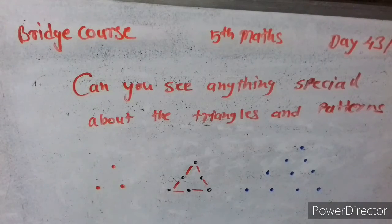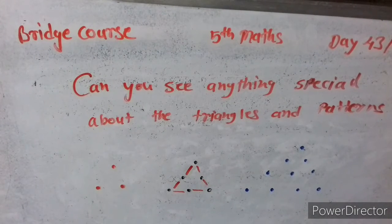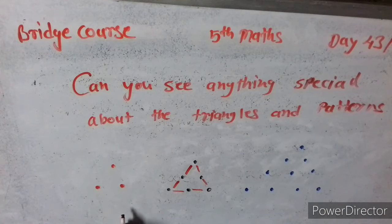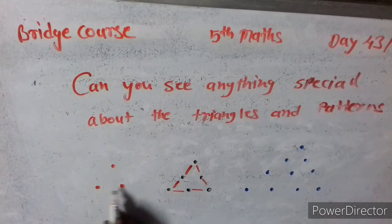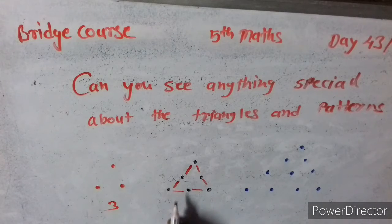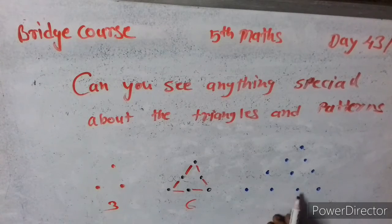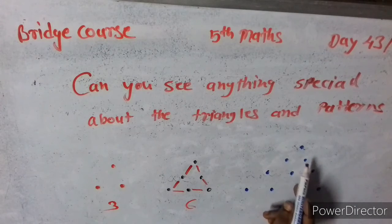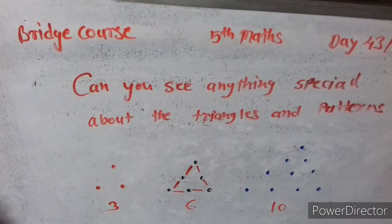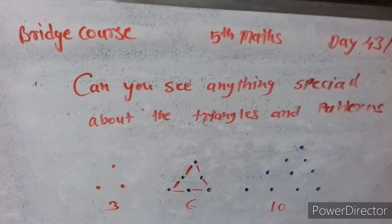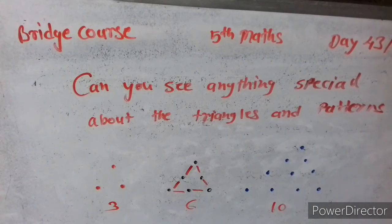If we count these numbers, it is called a triangular number. For example: one, two, three - three is the triangular number. One, two, three, four, five, six - six is a triangular number. One through ten - ten is the triangular number. If the numbers are arranged in a triangle, it is called a triangular number.